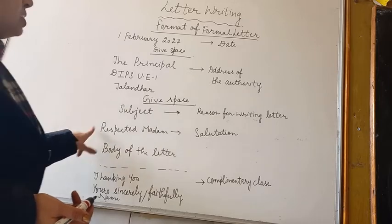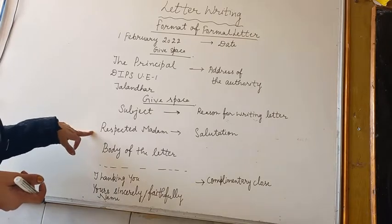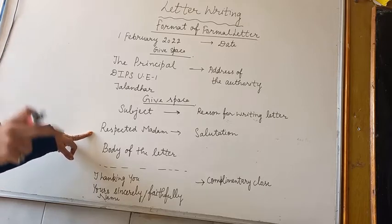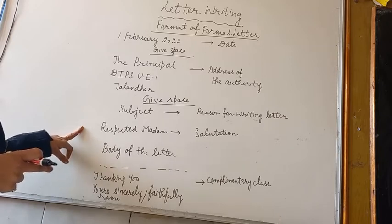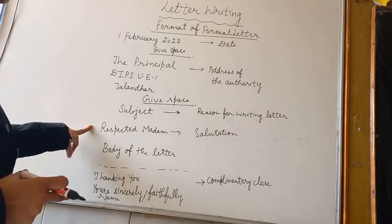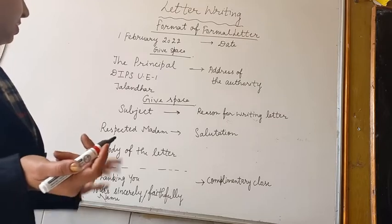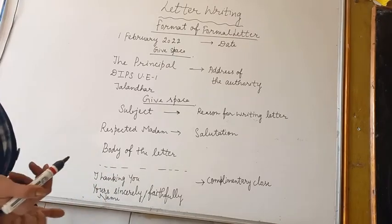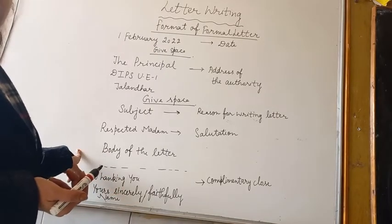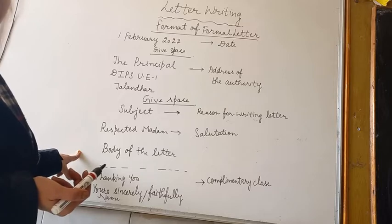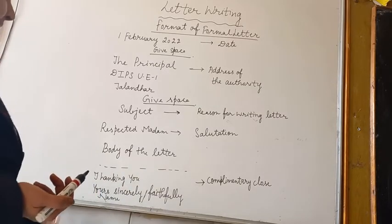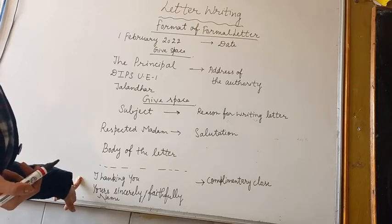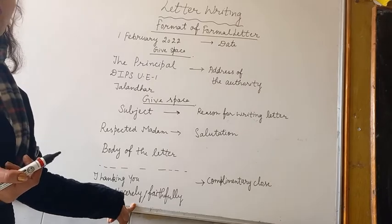Then after that you will use a salutation — the person to whom you are writing the letter, you will write their designation with 'Respected Madam' or 'Respected Sir.' Then after that you will start the body of the letter. In the body, you will write the matter for why you are writing — for example, if you want leave, you write: I am a student of this class, I am not feeling well so I can't come to school, or I have to attend some function, whatever the reason may be.